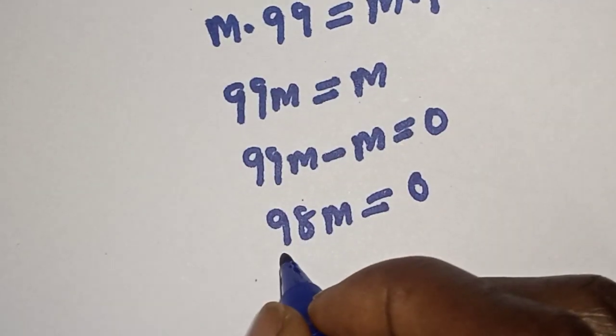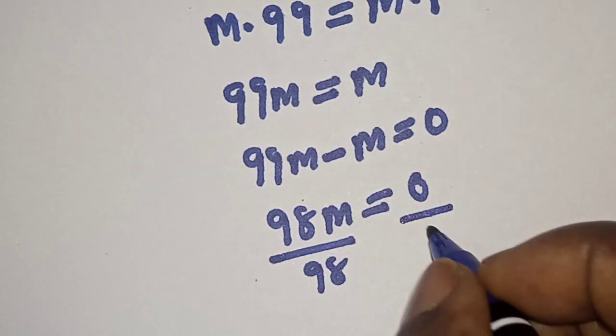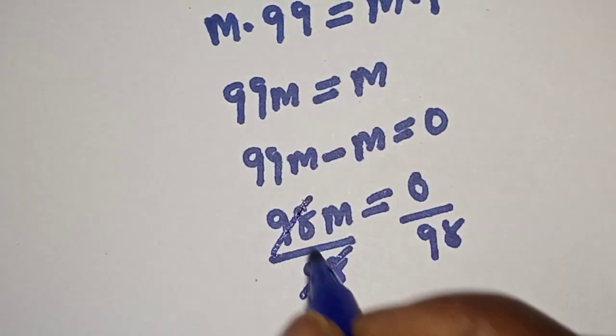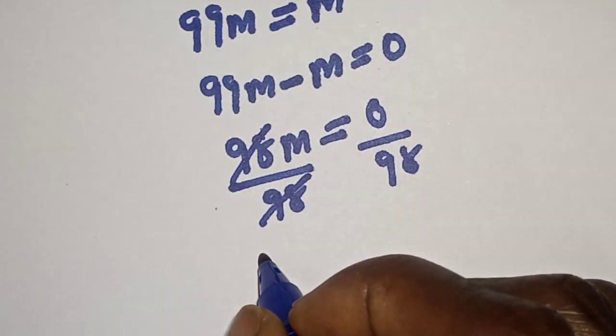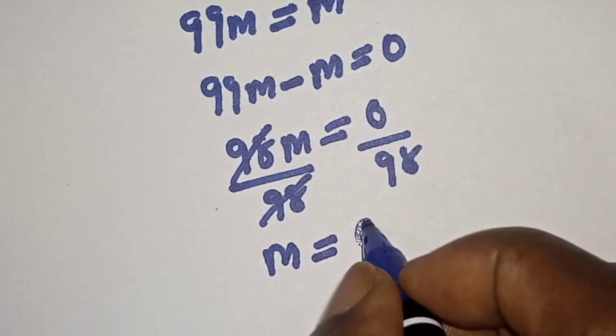We are looking for the value of M. Let's divide both sides by 98. This will cancel, giving us M equals 0 divided by 98, which equals 0.